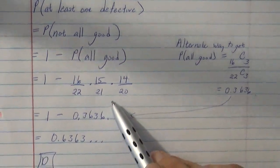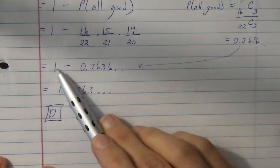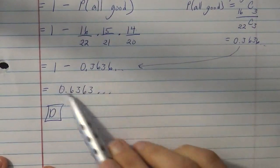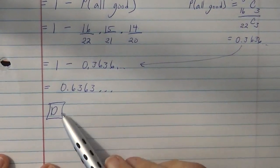and that's the probability that all of them are good, which means that if you do 1 minus that, you get 0.6363, and that is your answer D.